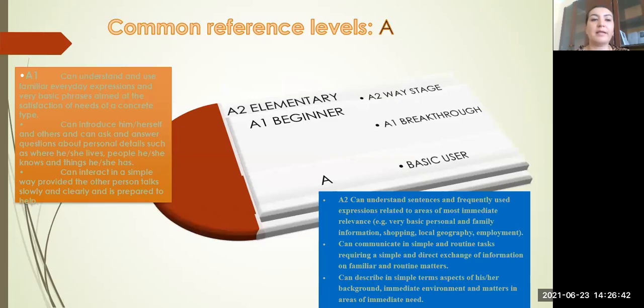Common reference levels: A1 is described when an individual can understand and use familiar everyday expressions and very basic phrases aimed at the satisfaction of needs of a concrete type. An A1 level learner can introduce himself or herself and others and can ask and answer questions about personal details such as where he or she lives, people he or she knows and things he or she has. An A1 language learner can interact in a simple way provided the other person talks slowly and clearly and is prepared to help.